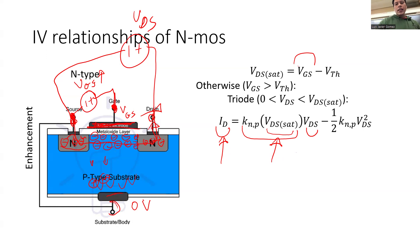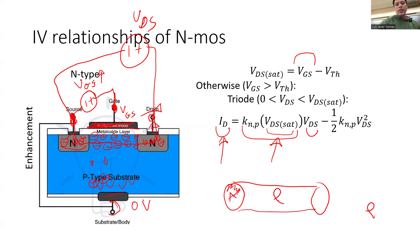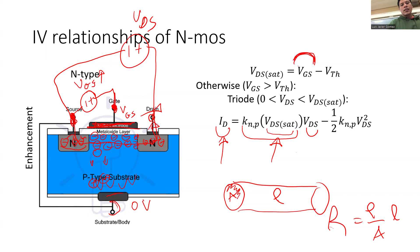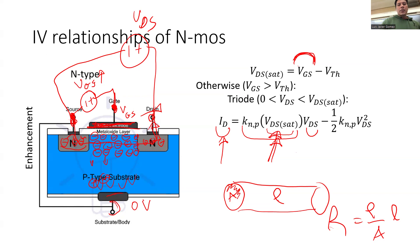To give you an analogy: if you look at a resistor, you have the resistivity of the material rho, and your resistance equals rho times length divided by area. You can think of it as: as you increase VGS, there are more and more of these negative charges, and that channel becomes wider and wider. Because it becomes wider and wider, you can get more and more current through — the resistance becomes lower and lower. That's the triode region.